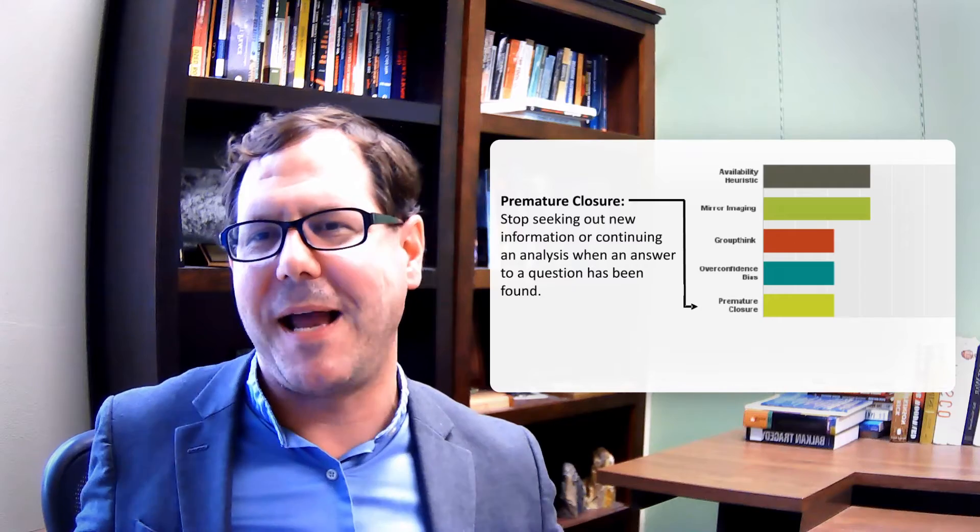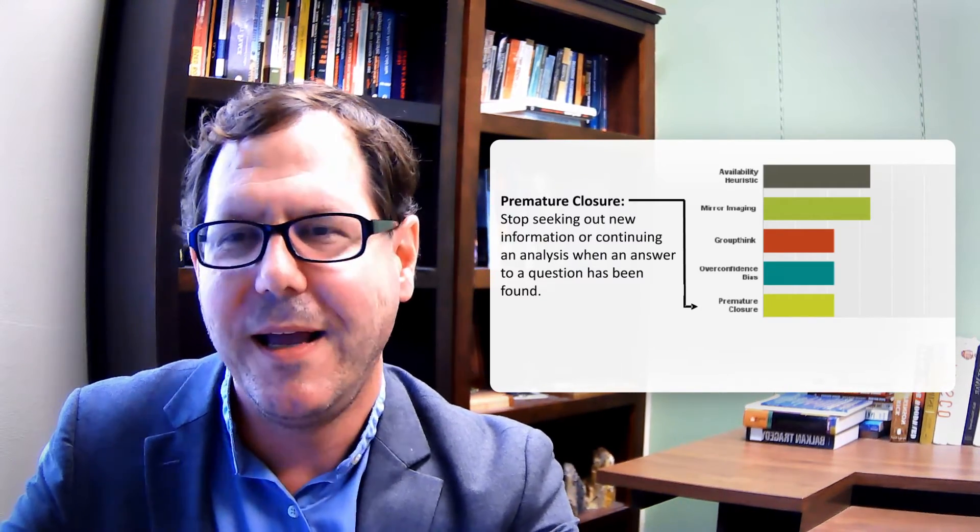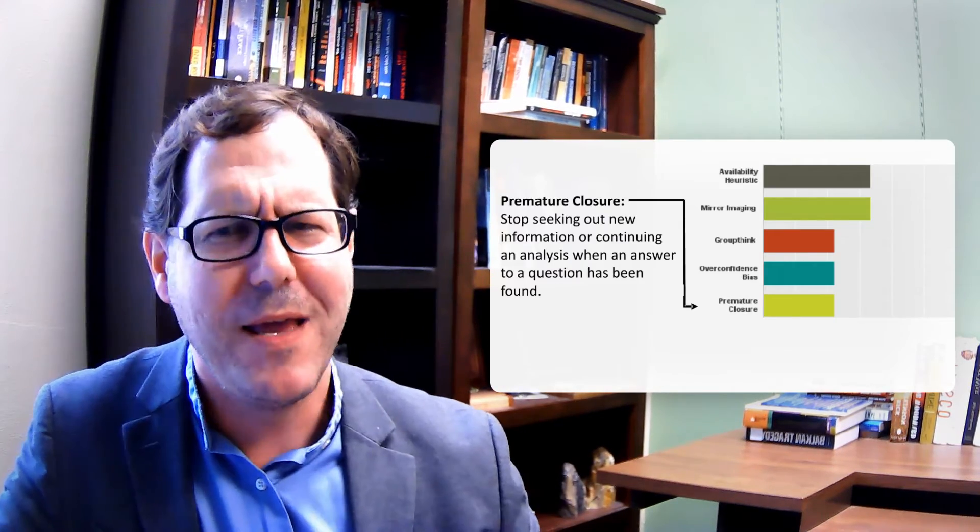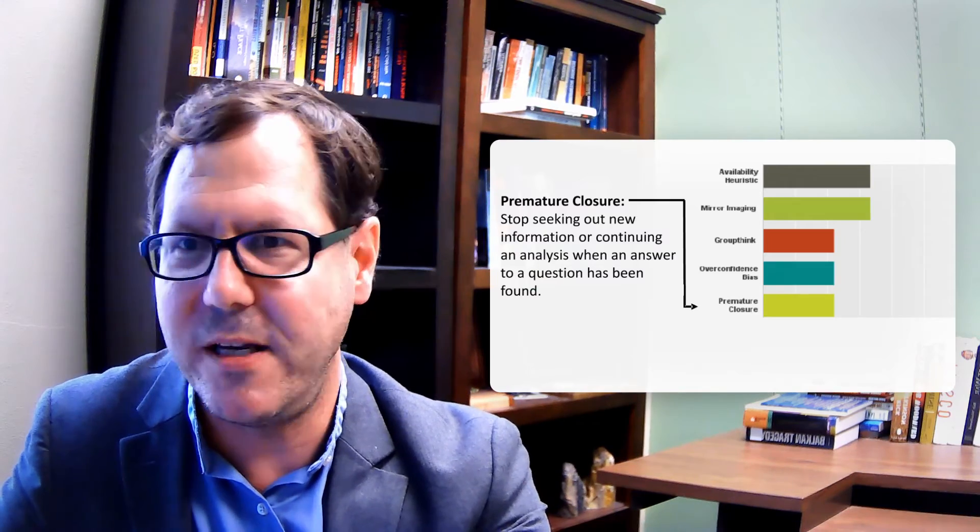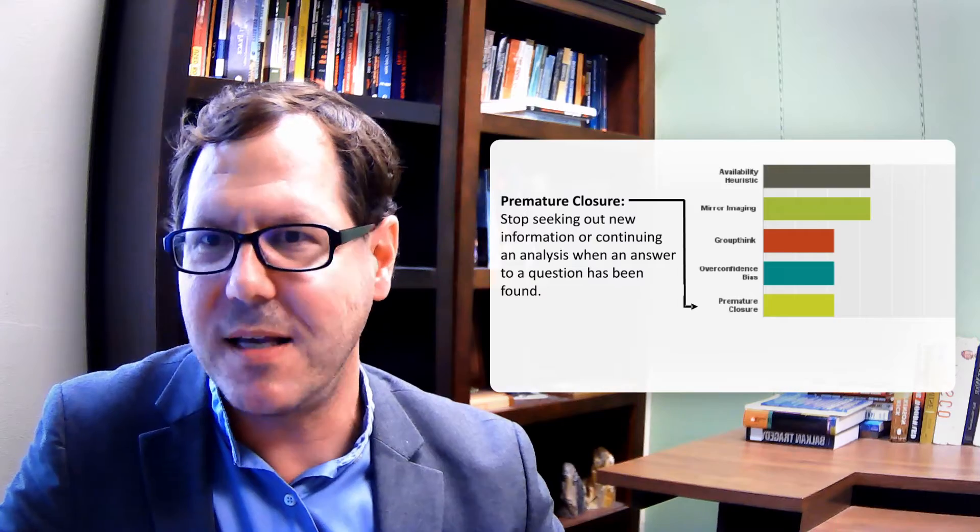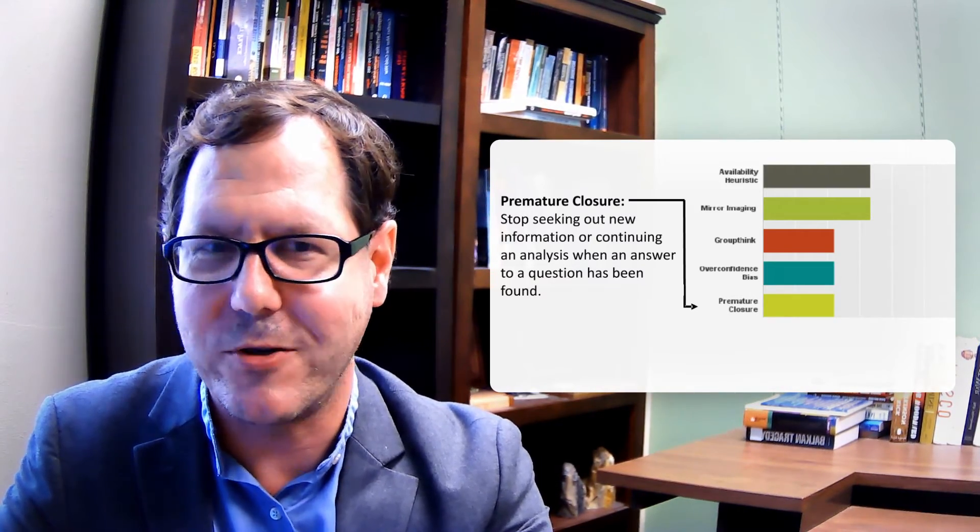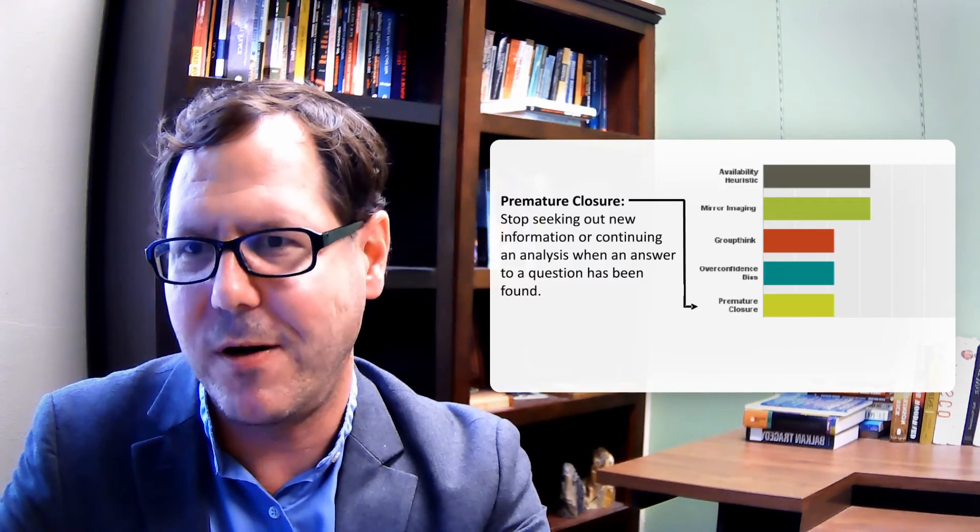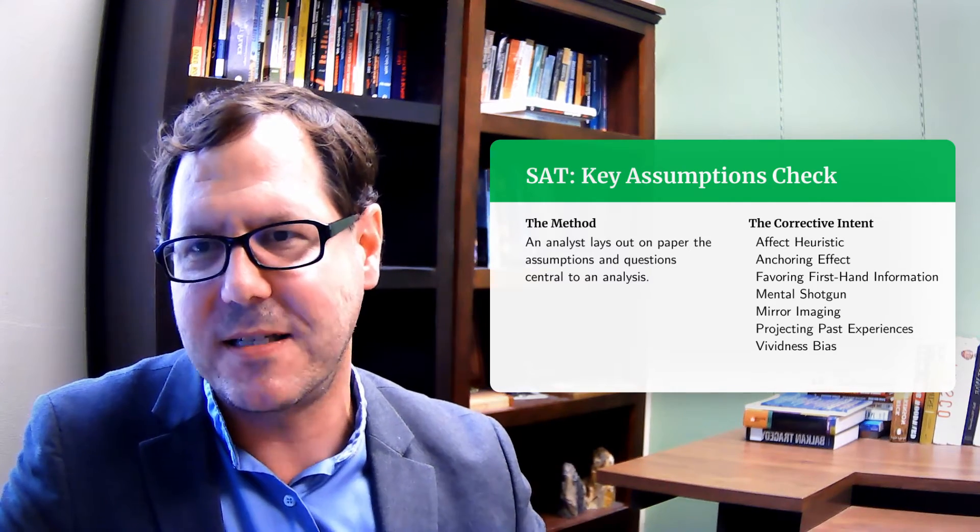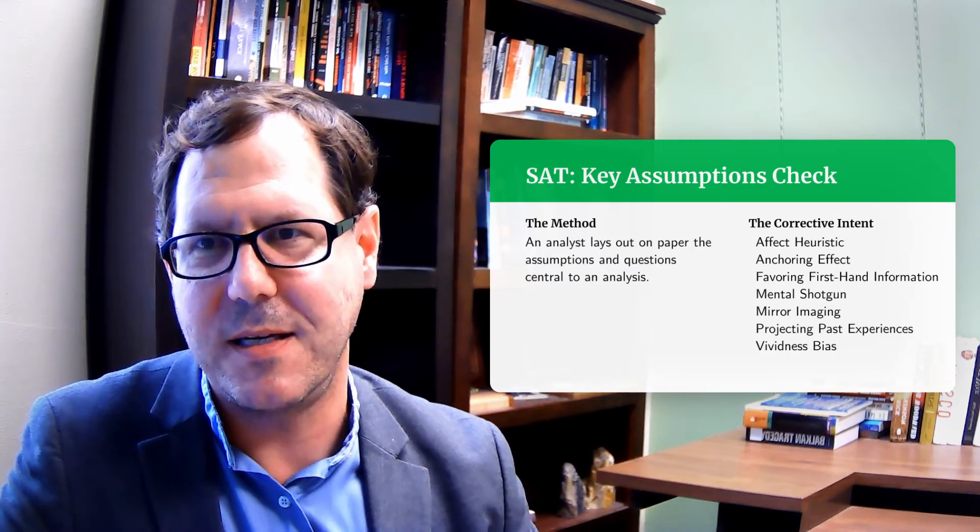These are the 10 biases that analysts have said are most likely to affect their work. The question is how do we counter this? Is simply knowing and naming them enough, or do we need to use a method? This paper tries to match these various biases with different structured analytic techniques to see how those techniques can mitigate those biases.